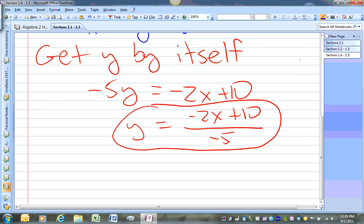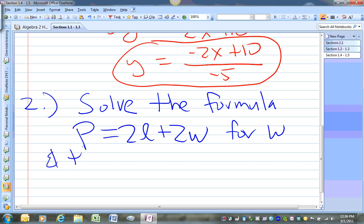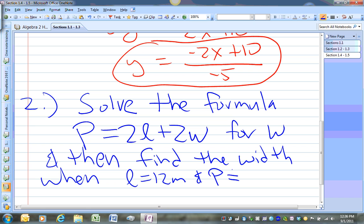Let's try another example. Let's say you're asked to do the following. Solve the formula P equals 2l plus 2w. And then find the width when L equals 12 meters and P equals 41 meters.